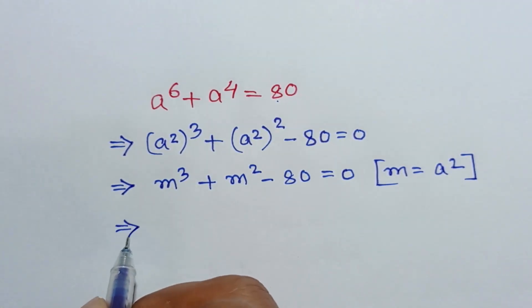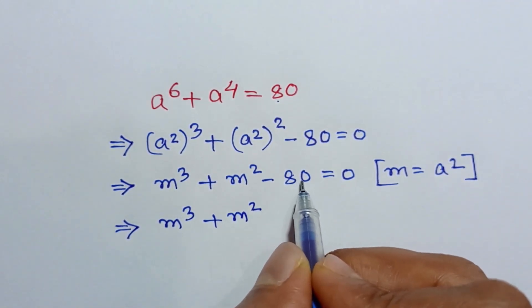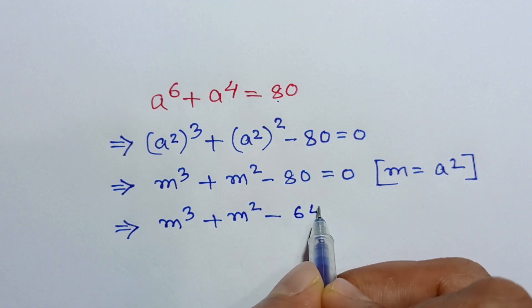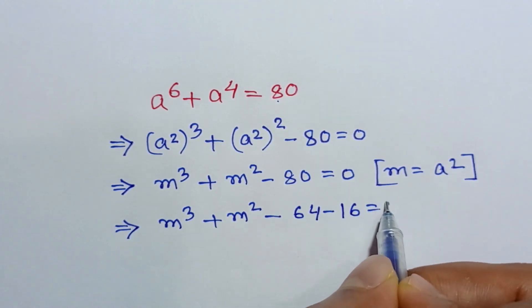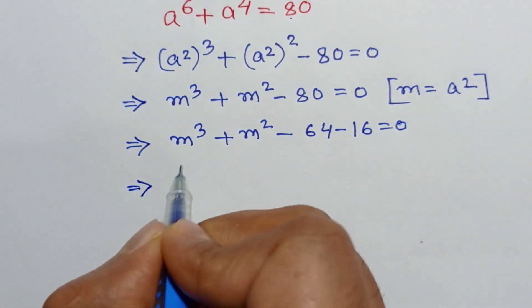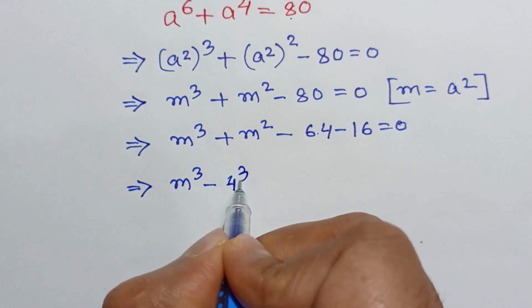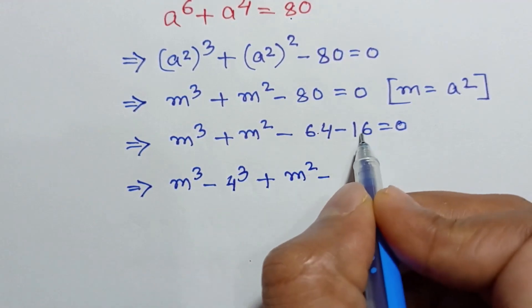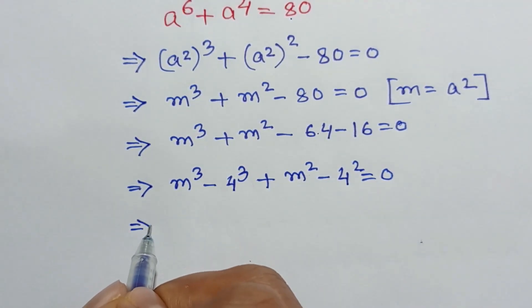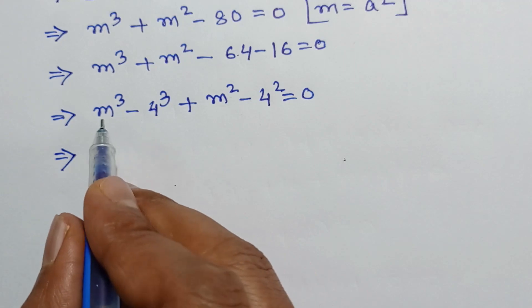Now, the nearest cubic number to 80 is 64, so we rewrite: m³ + m² − 64 − 16 = 0, or m³ − 64 + m² − 16 = 0, where 64 = 4³ and 16 = 4².